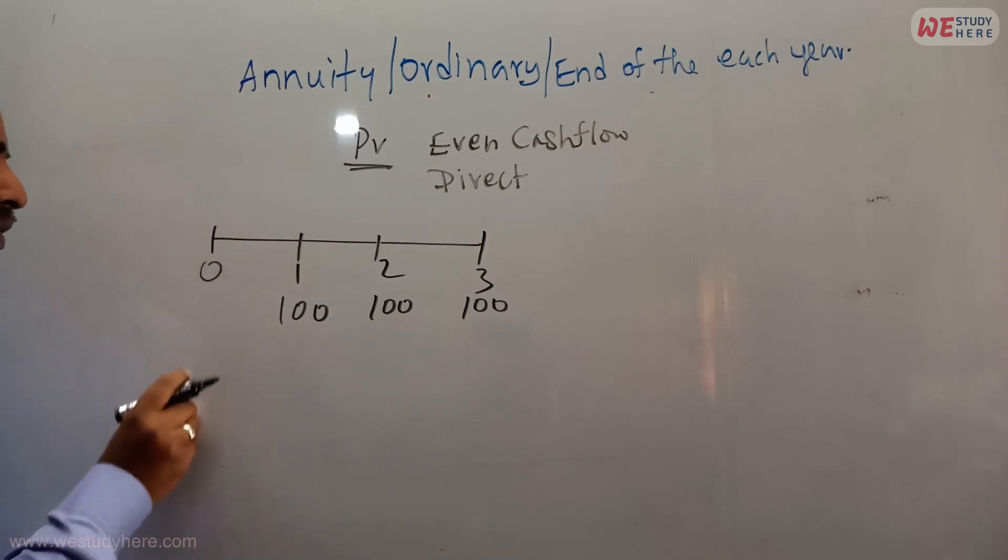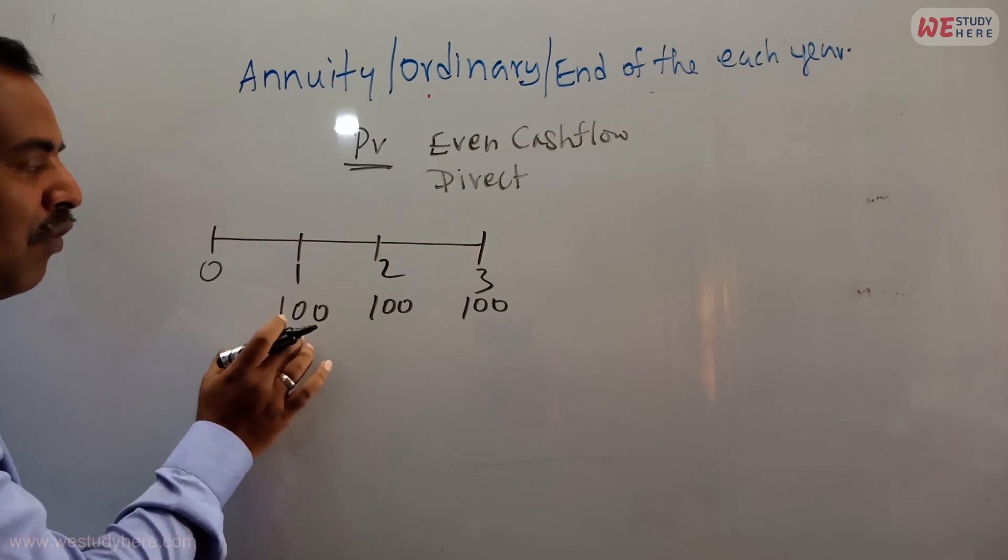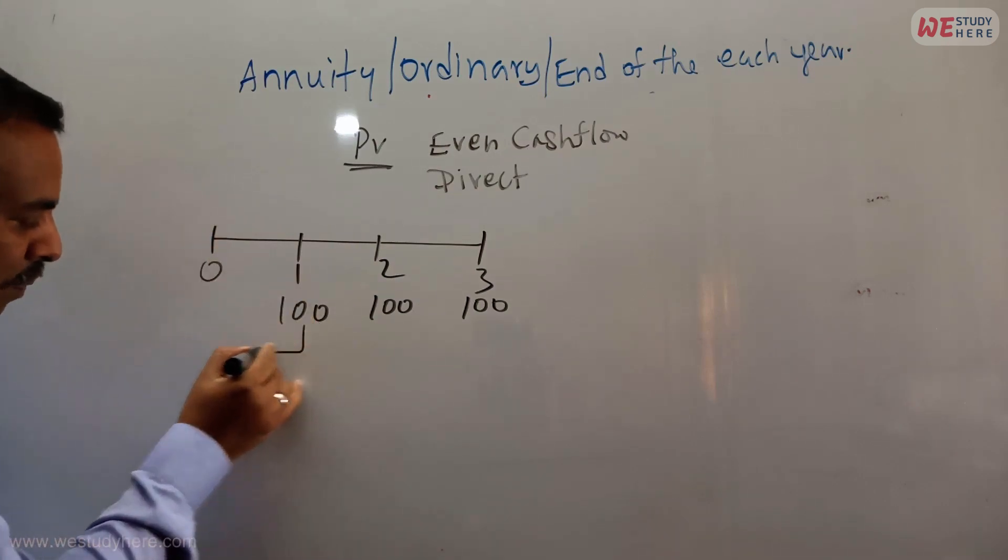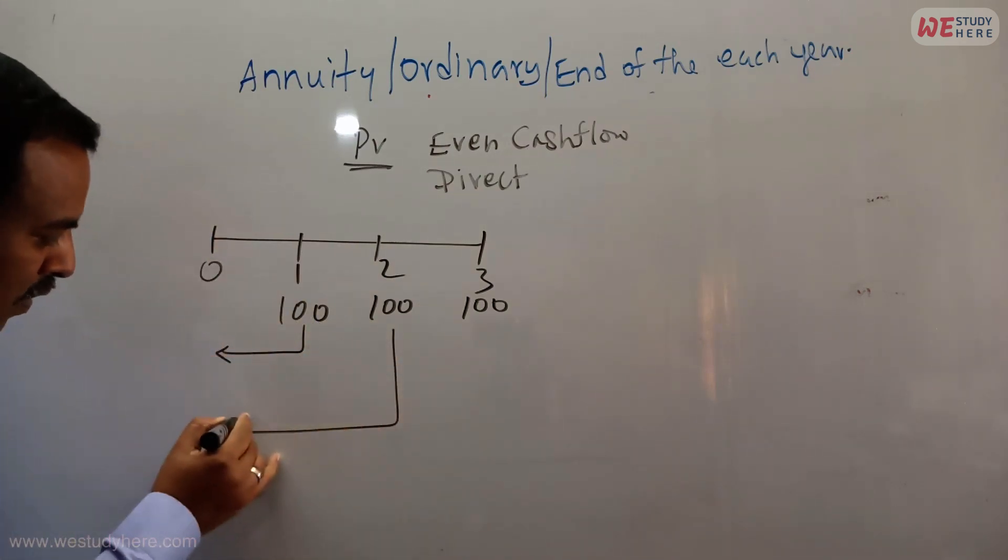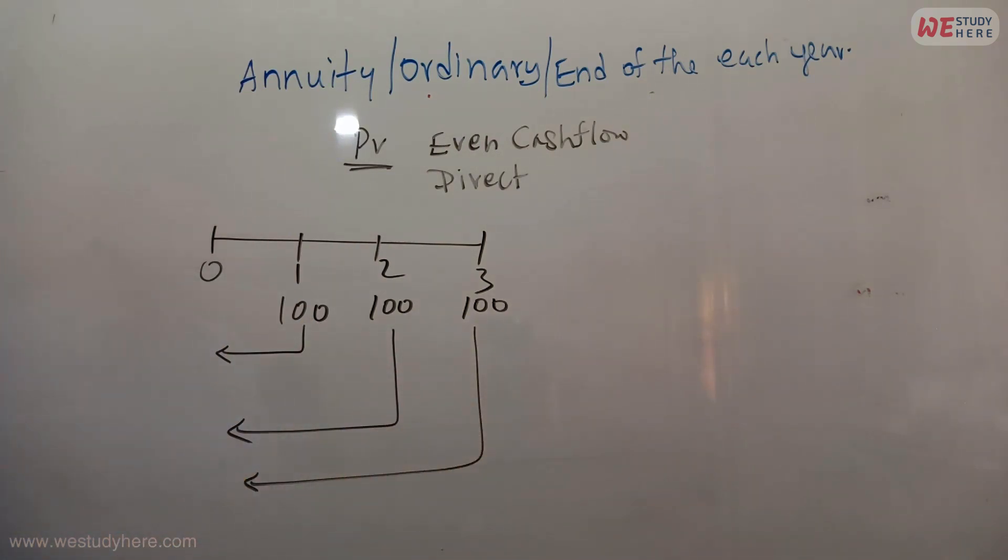Now I want to find the present value. If I want to find the present value, mean year zero. If I want to find the present value, this value becomes future value. Now I want to find the present value of this amount, present value of this amount, present value of this amount.